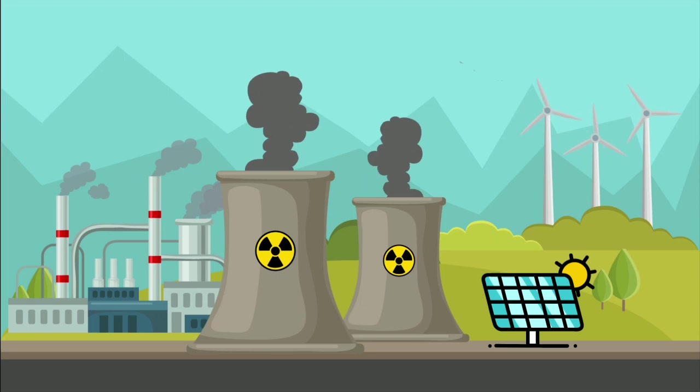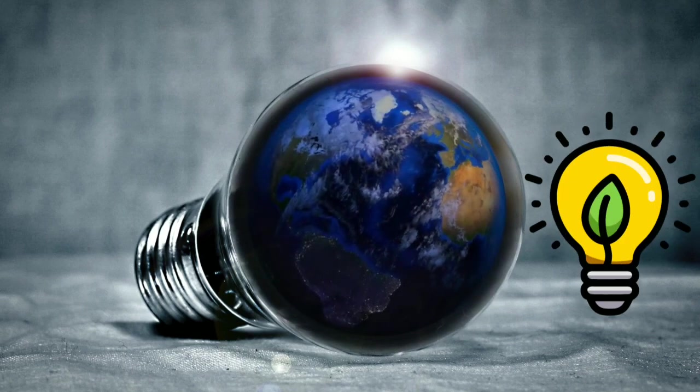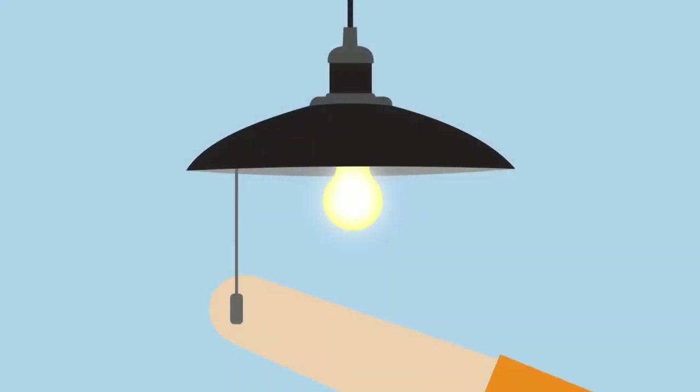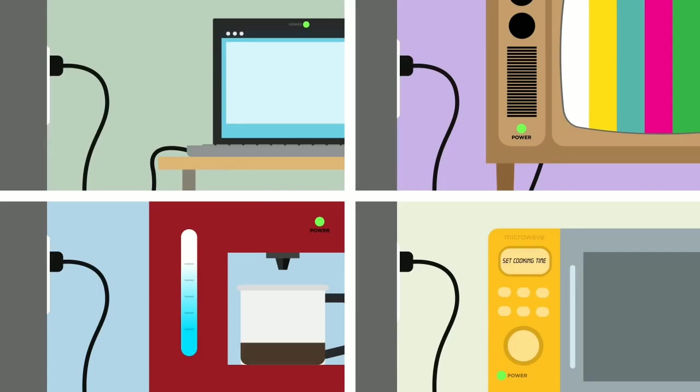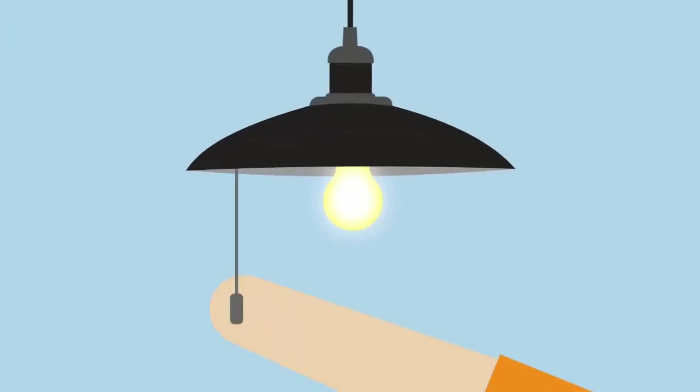Conserve energy. Since energy production creates large amounts of the pollutants that cause acid rain, one important step you can take is to conserve energy. You can do this in a number of ways: turn off lights, computers, televisions, video games, and other electrical equipment when you are not using them.